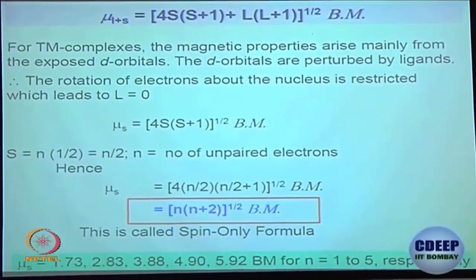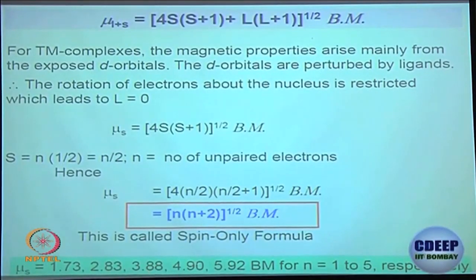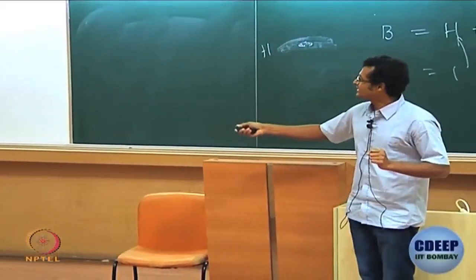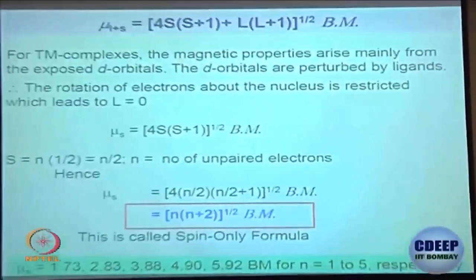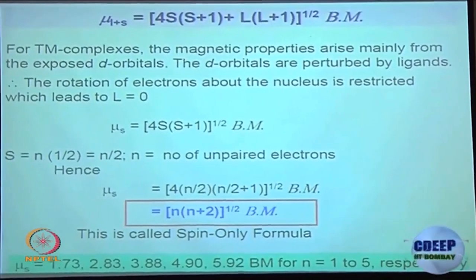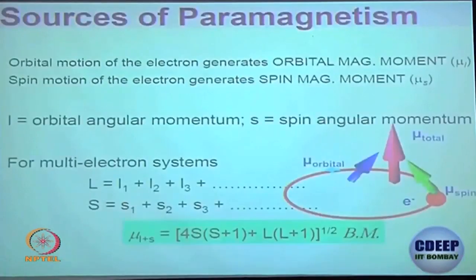For d-block elements you usually do not have to calculate L values — you can just plug in the S value. The spin-only value simplifies to √(n(n+2)), where n is the number of unpaired electrons. For one, two, three, four, five unpaired electrons and so on, you get the corresponding magnetic moment values. By knowing the number of unpaired electrons, you can predict the experimentally observed magnetic moment for most cases. However, the experimentally observed value is sometimes slightly higher — or even much higher — because of the assumption that the orbital component does not exist.